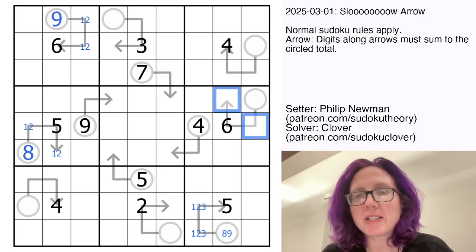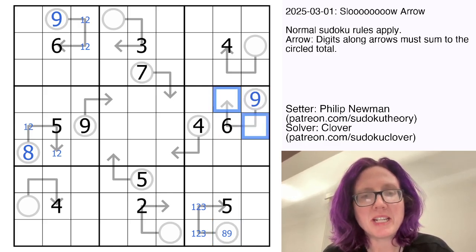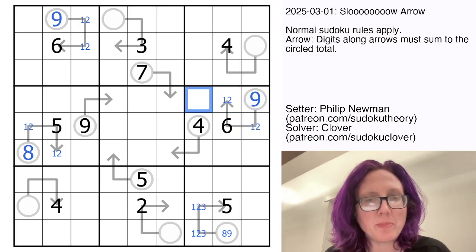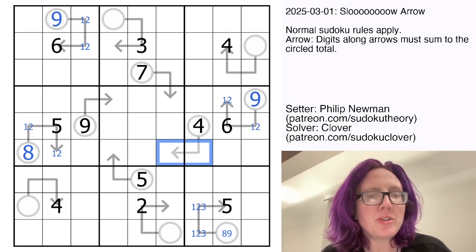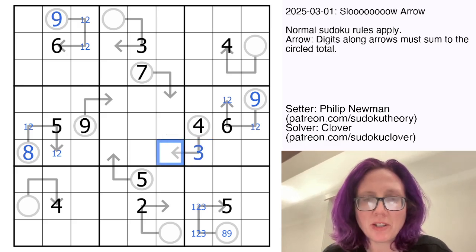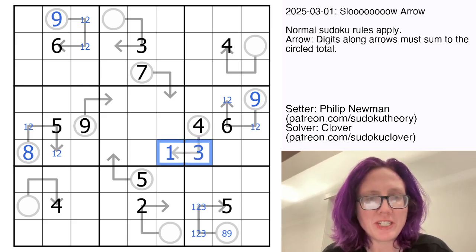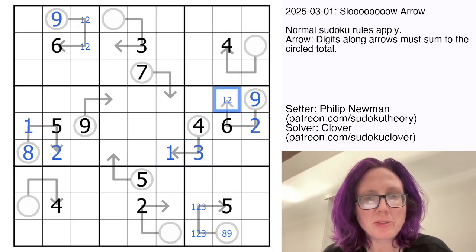I see another six on a length three arrow. That will have to be nine with a one-two pair. Four and two cells, if they can't see each other, which they can't here, will always be three and one, and that makes this a two and a one, which kind of bounces back and takes care of some of this stuff.